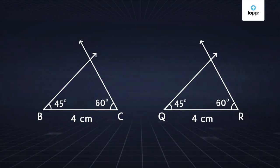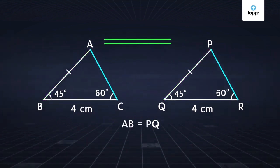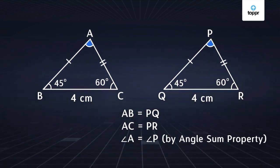Let's mark the points of intersection as A and P respectively. On measuring the sides AB, AC, PQ, and PR, we realize that side AB is equal to side PQ, and side AC is equal to side PR. Also, the measures of angles A and P are equal by the angle sum property of triangles.